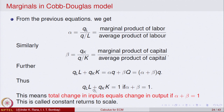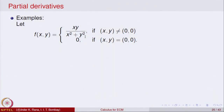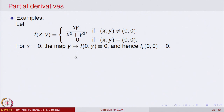Let us continue our study of partial derivatives of functions of two variables. Consider the function f(x, y) equal to x·y divided by x squared plus y squared when (x, y) is not equal to (0, 0), and the value is 0 at the point (0, 0). For this function, let us fix x equal to 0 and consider the map y going to f(0, y). When x is fixed as 0, the function is 0 times y divided by y squared, which equals 0.